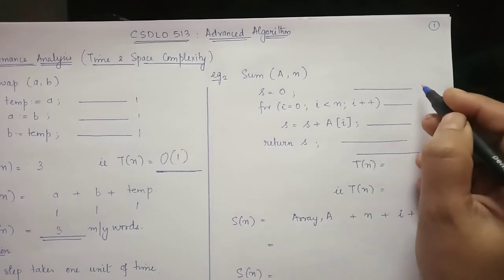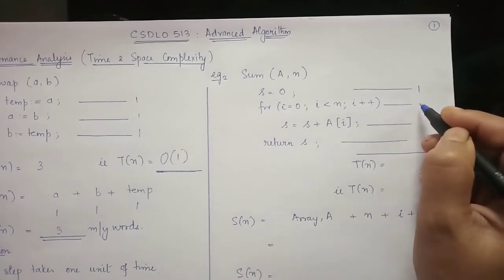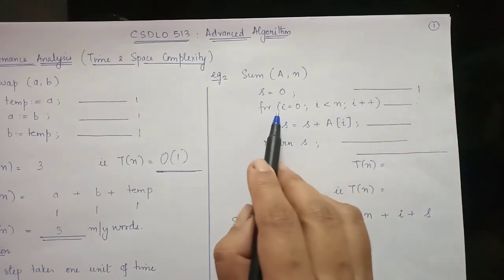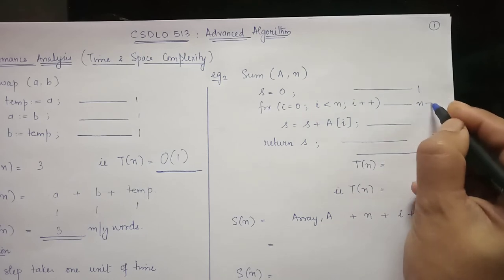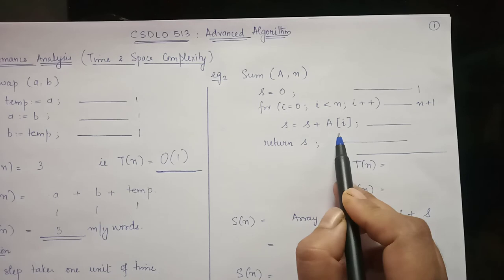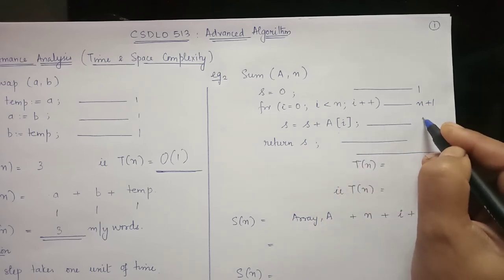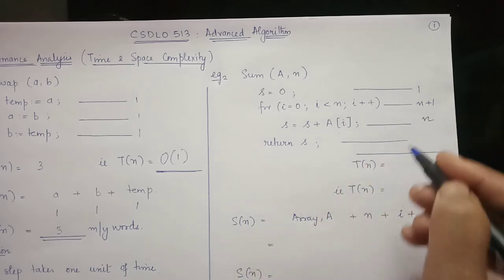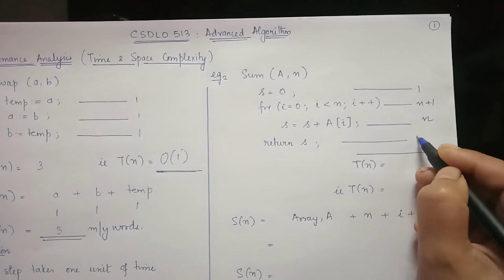So the time associated with each of these steps are as follows. One unit of time here is a loop and this loop will be executed n plus 1 times. So the statement within this loop will get executed n times. Now this return statement will get executed one time.